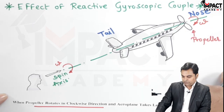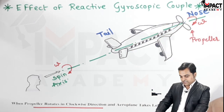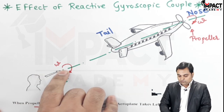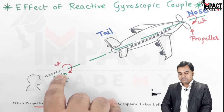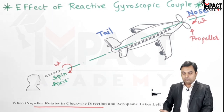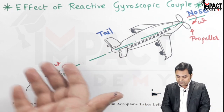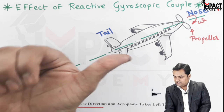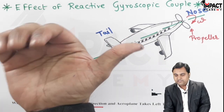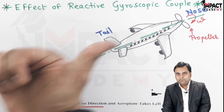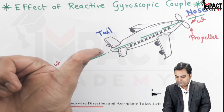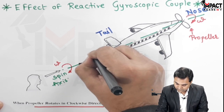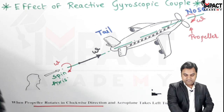Looking from the observer, the clockwise direction is denoted by Omega, the velocity of the propeller. The propeller rotates in clockwise direction looking from rear. To indicate this angular velocity as a vector, use the right-hand rule — curl the fingers along the direction of this velocity. Since the velocity is clockwise, when curling the fingers, the thumb points towards the plane, indicating the velocity vector Omega.